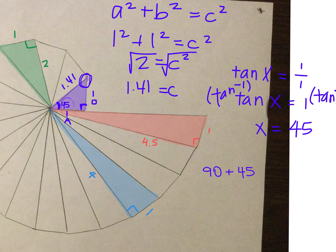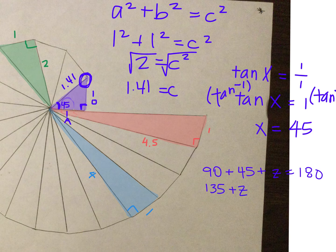My last part, I'm going to call Z because I don't know what it is. It's that one I've circled. And we know that a triangle equals 180. 90 plus 45 is 135 plus Z equals 180. I subtract 135, I get Z equals 45.